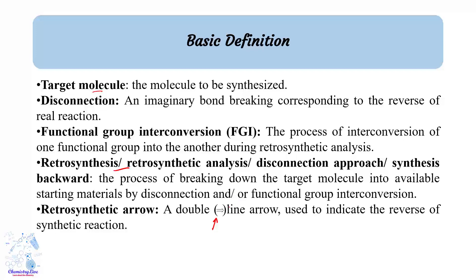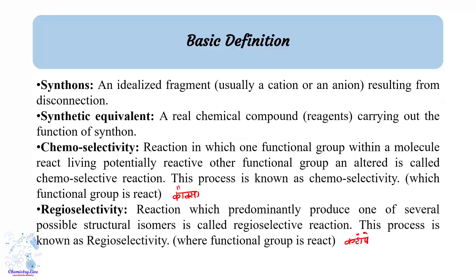A synthon is an idealized fragment resulting from disconnection. A synthetic equivalent is a real chemical compound or reagent that carries out the function of a synthon. So from the synthon we derive the synthetic equivalent, which is the actual reagent used in the synthesis.